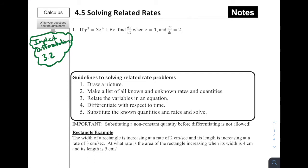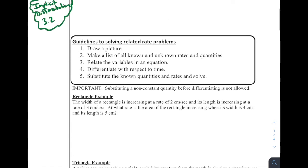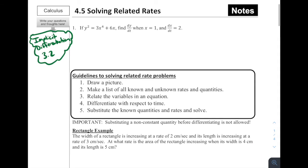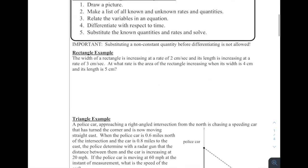These related rates problems sort of come down to two different types. One, where they give us some sort of arbitrary equation with some rates and ask us to find a particular value. The other type, which we see later, gives you a scenario where you need to draw a picture and figure out the equation yourself. Problems where they give you the equation are probably more frequent on the AP exam — they show up on both multiple choice and free response. The scenario-based ones are less common in the free response section, but they do come up.